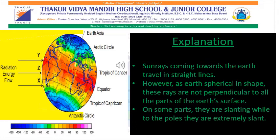Now back to the chapter. Let's relate this example with the Sun and the planet Earth. Think of the torchlight as the sun rays and your paper as the places on the Earth. Sun rays coming towards the Earth travel in straight lines. However, as the Earth is spherical in shape, they are not perpendicular to all parts of the Earth's surface. In some parts they are perpendicular, whereas in other parts they are slanting.